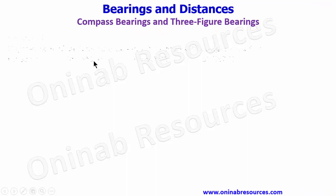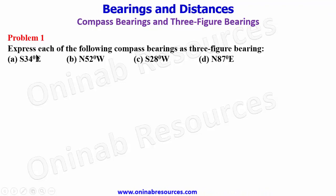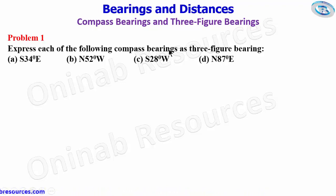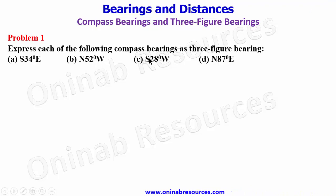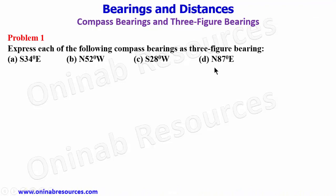So we take our first problem, Problem 1: Express each of the following compass bearings as three-figure bearings. A: south 34 degrees east. B: north 52 degrees west. C: south 28 degrees west. And D: north 87 degrees east.